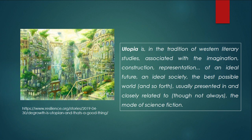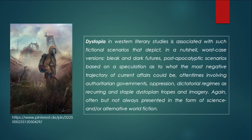Broadly, utopia is in the tradition of western literary studies associated with the imagination, construction, and representation of an ideal future — an ideal society, the best possible world — often presented in, though not always, the form of science fiction and or alternative world fiction. In contradistinction, dystopia is associated with fictional scenarios that depict worst-case versions, bleak and dark futures, post-apocalyptic scenarios based on speculation as to what the most negative trajectory of current affairs could be — oftentimes involving authoritarian governments, oppression, and dictatorial regimes as recurring staple dystopian tropes and imagery.